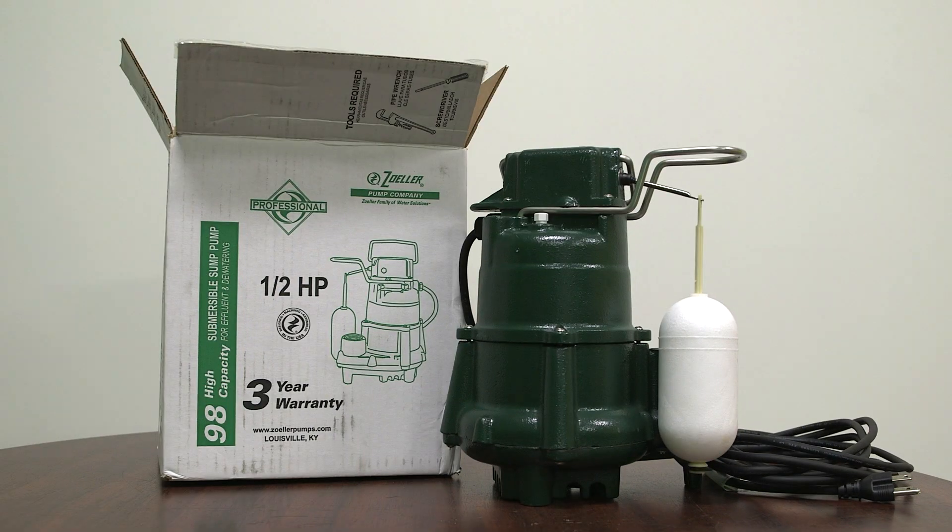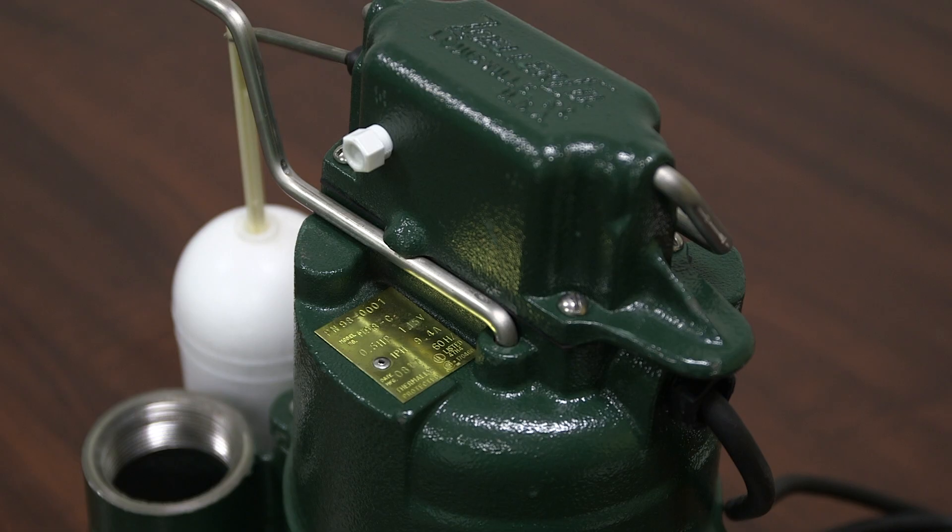The half horsepower M98 Flowmate pump is designed for use in residential or light commercial dewatering applications and can be used to transfer ground water or effluent.